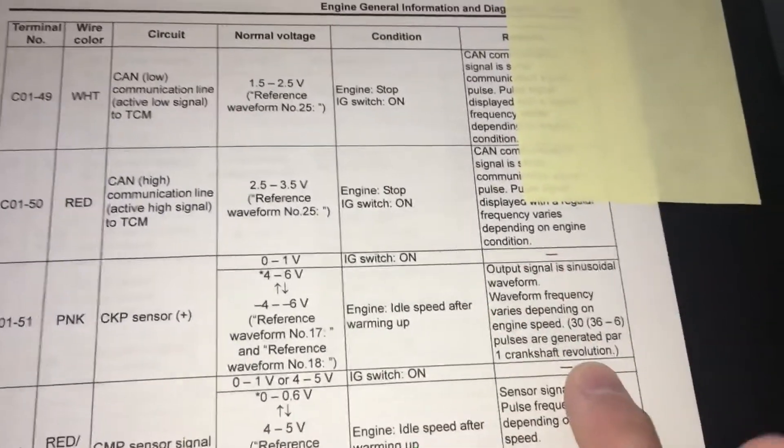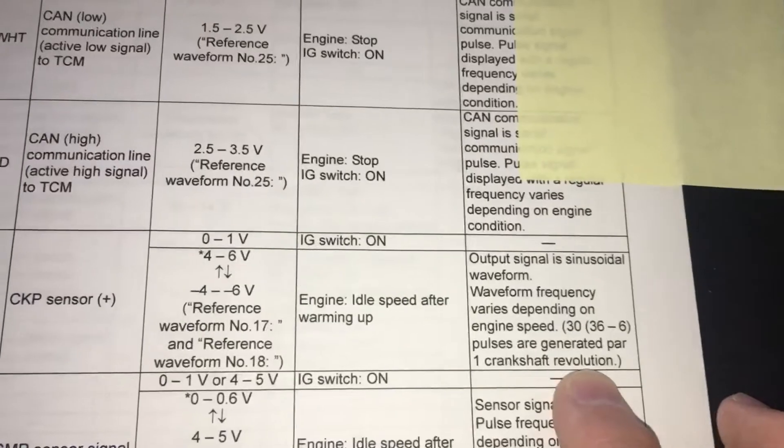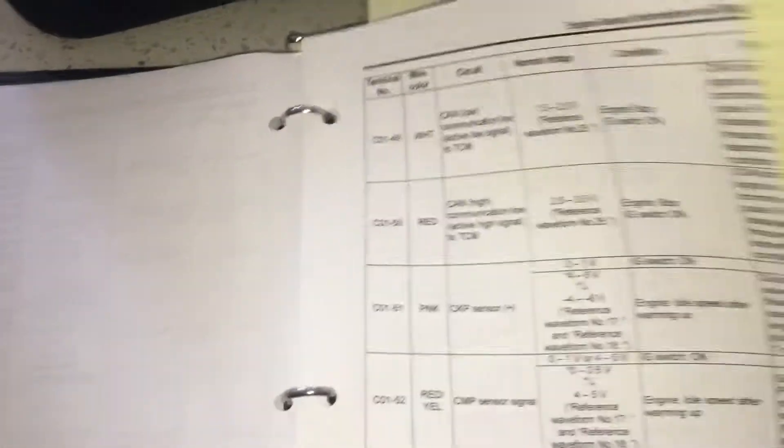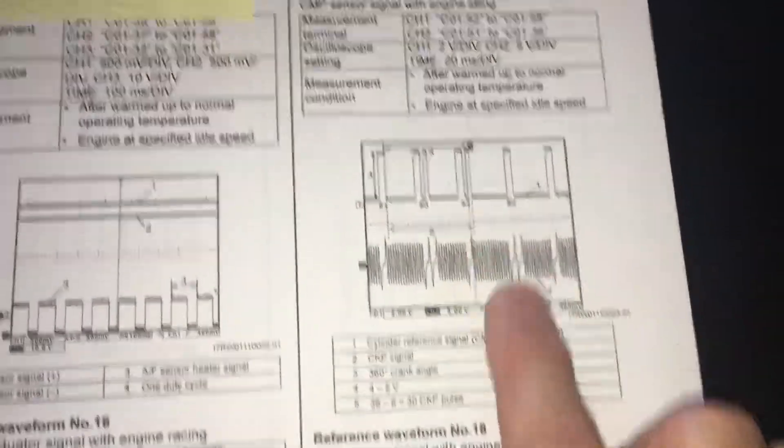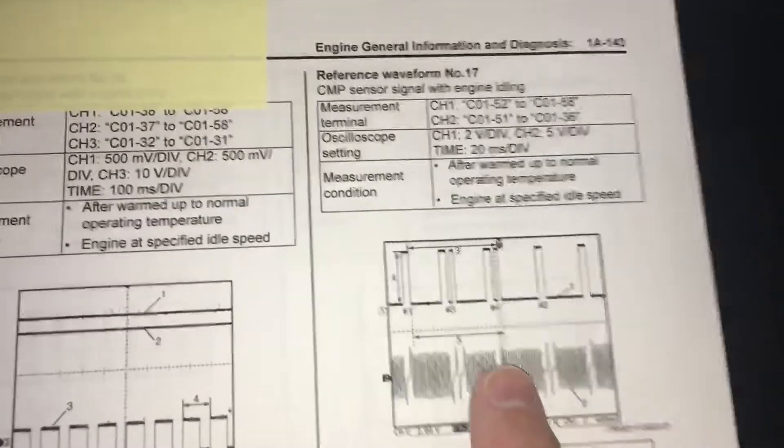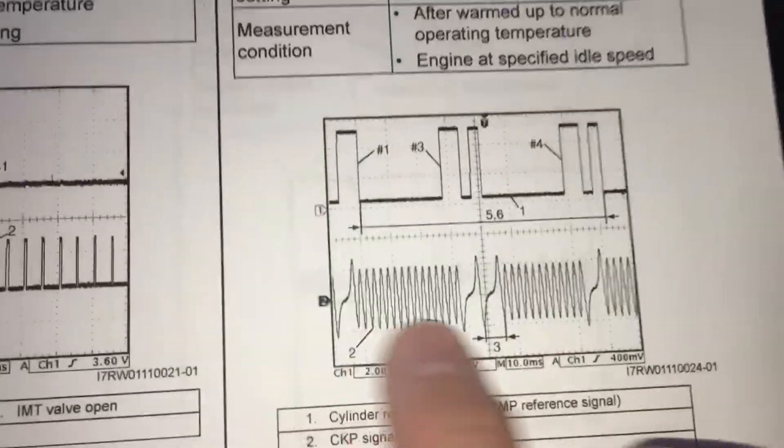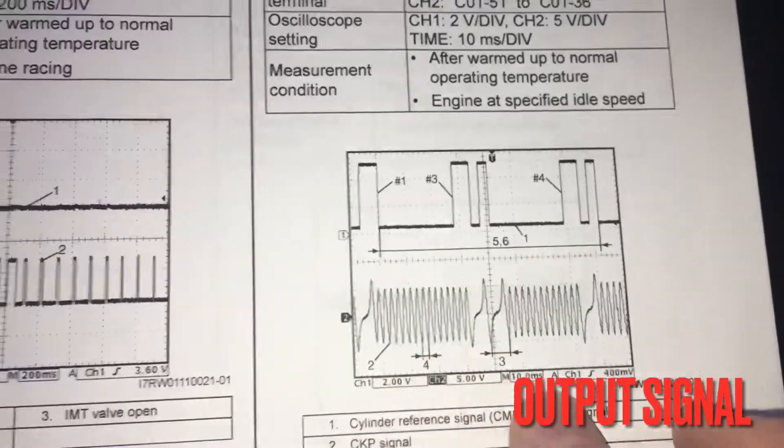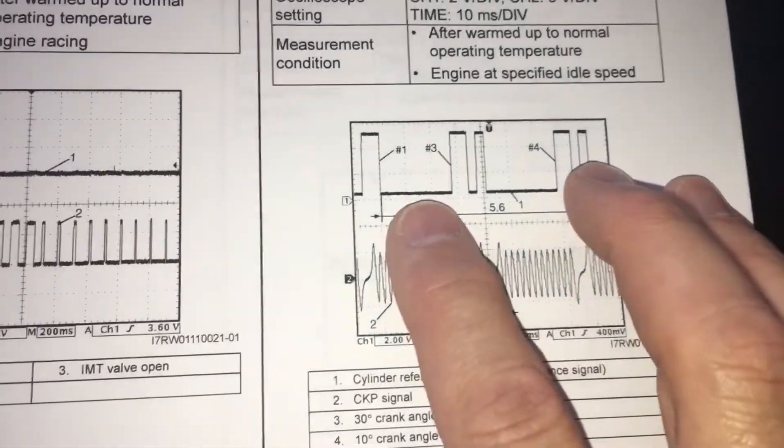And in addition to that, it even goes so far as to show us the scope. It mentioned in the previous page there, reference waveform number 17 and 18, and here is the crank sensor. So the manual actually tells us what we can expect.